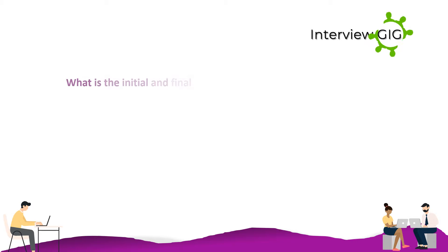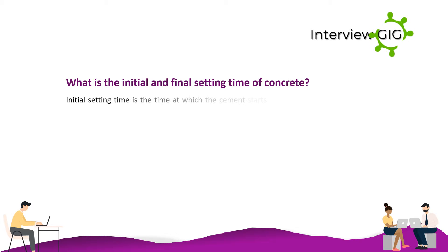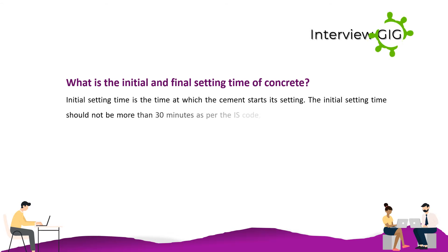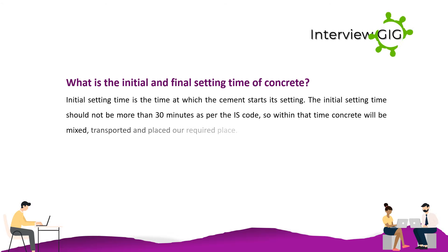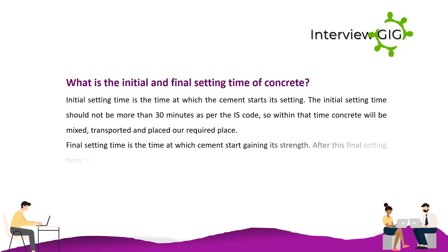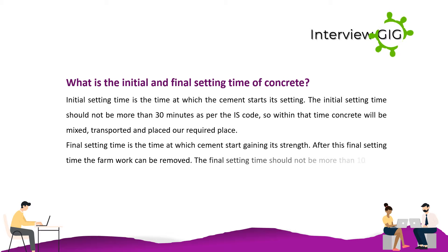What is the initial and final setting time of concrete? Initial setting time is the time at which cement starts its setting. The initial setting time should not be more than 30 minutes as per IS code, so within that time concrete will be mixed, transported and placed. Final setting time is the time at which cement starts gaining its strength. After the final setting time, the formwork can be removed. The final setting time should not be more than 10 hours as per IS code.